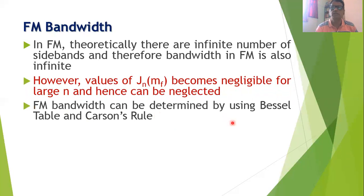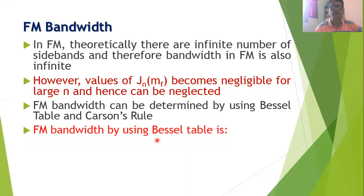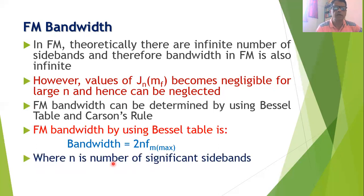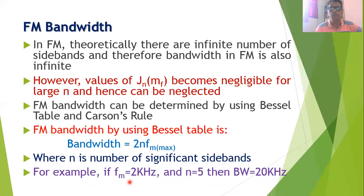FM bandwidth can be determined by two methods: using the Bessel table, or using Carson's rule. Using the Bessel table, the formula is: BW = 2n · FM(max), where n is the number of significant sidebands and FM(max) is the maximum modulating signal frequency. For example, if FM(max) = 2 kHz and n = 5 significant sidebands, then BW = 2 × 5 × 2 kHz = 20 kHz.